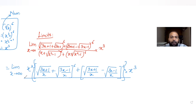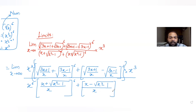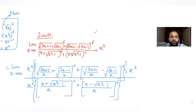In the denominator, if I take out x common, since each term is raised to the 6th power, I can directly take out x⁶ common. What remains is (x + √(x²−1))/x raised to 6, plus (x − √(x²−1))/x raised to 6 — so we divide both expressions in the denominator by x. Now x⁶ from the numerator and x⁶ from the denominator cancel each other.